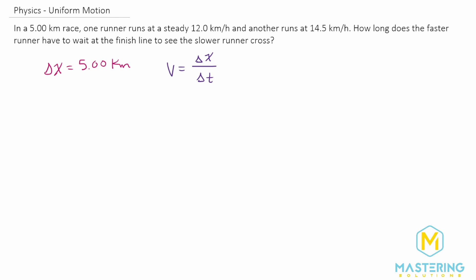And so we need to find what the time is for both of them. So let's start off with the faster runner, and we'll call him R1.